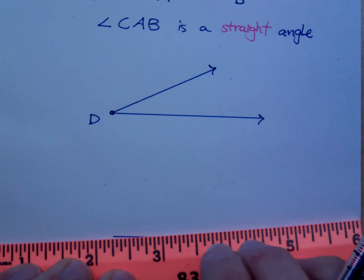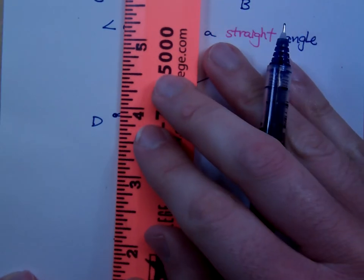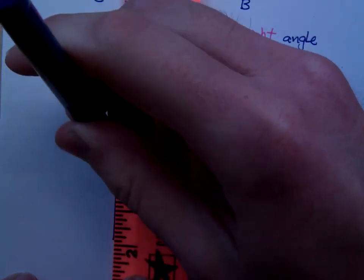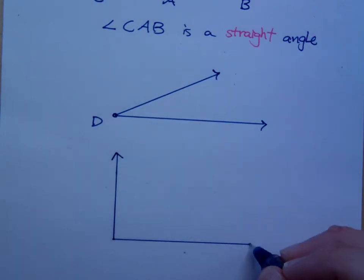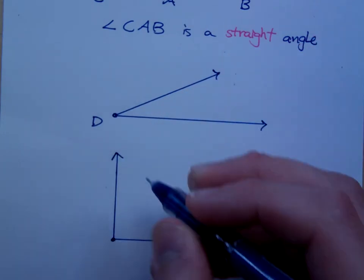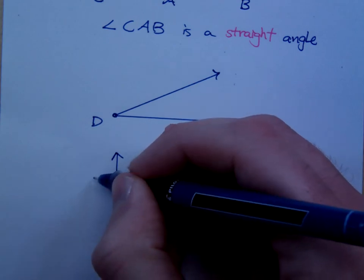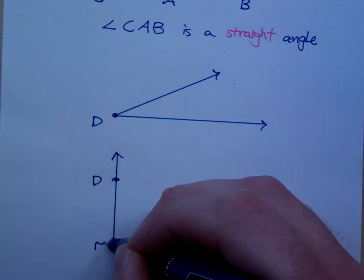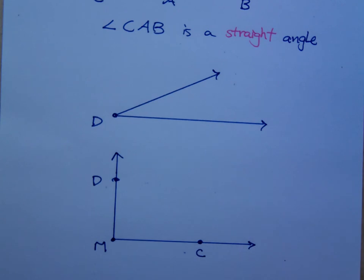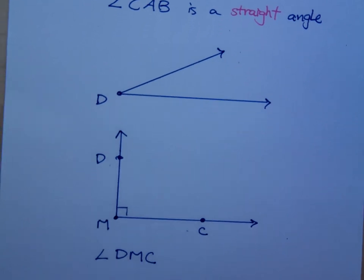If I were to draw this. So, this is angle DMC. If I draw this little symbol in here, what does that do? What does that call it? What does it make it? So, this guy is what we call a right angle.